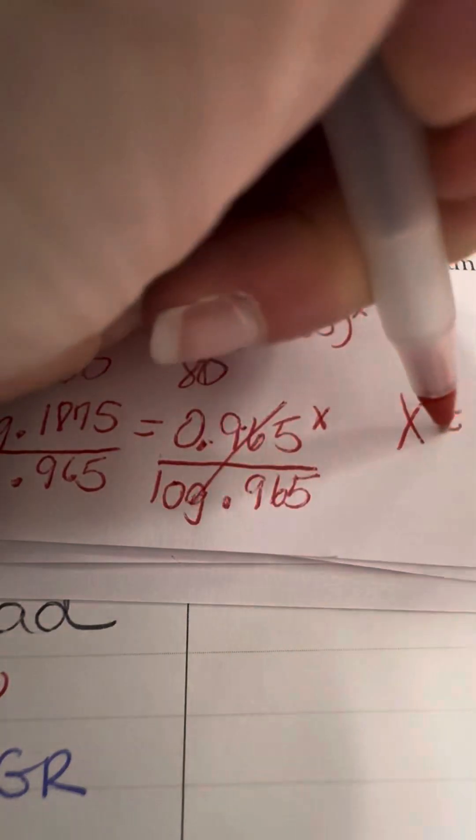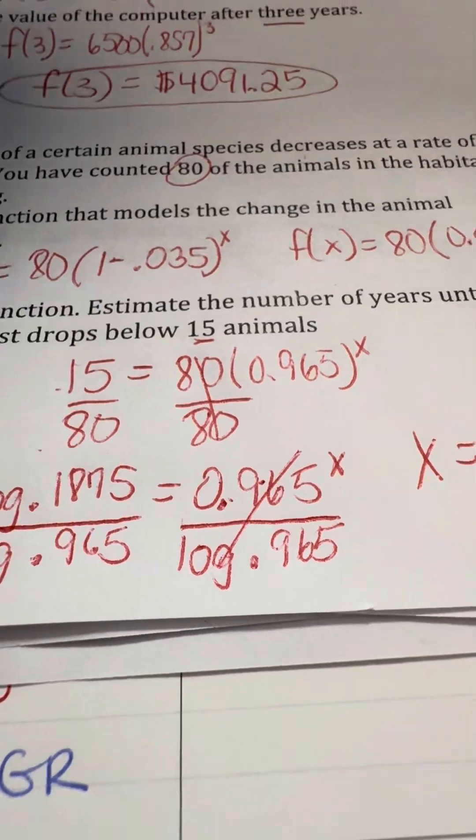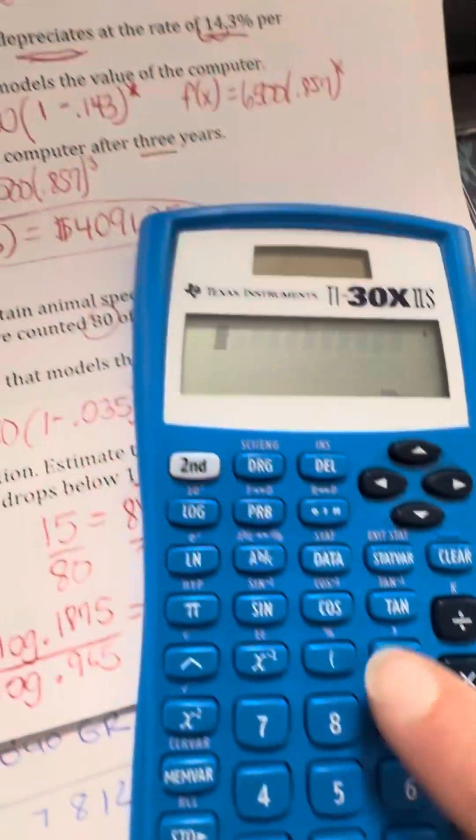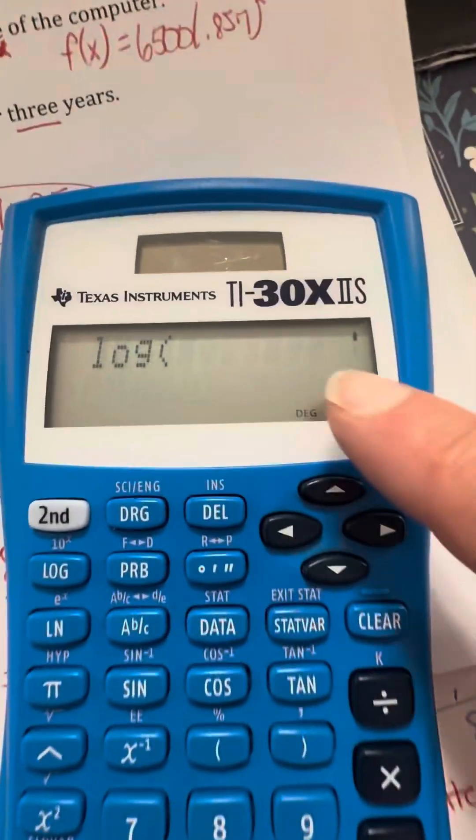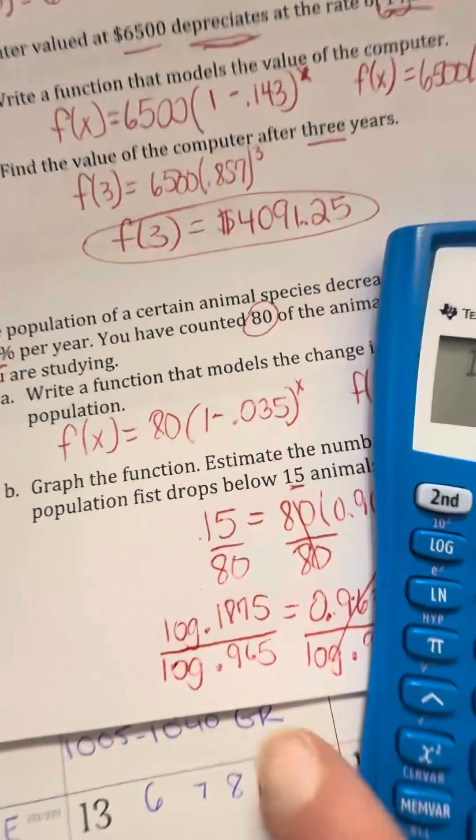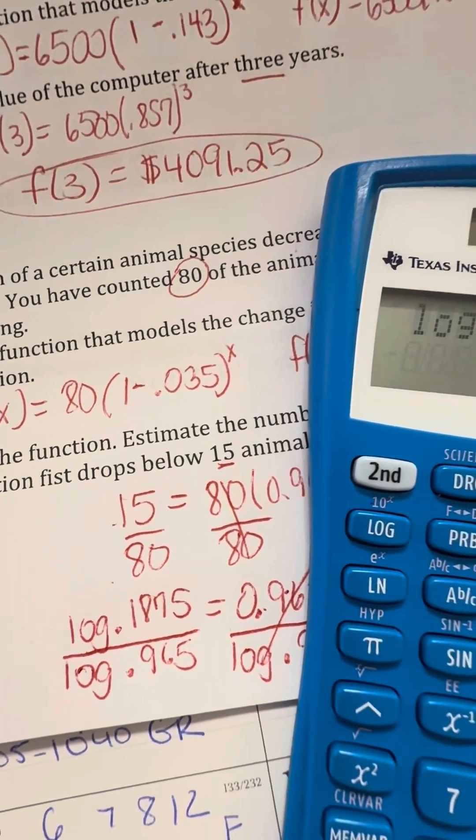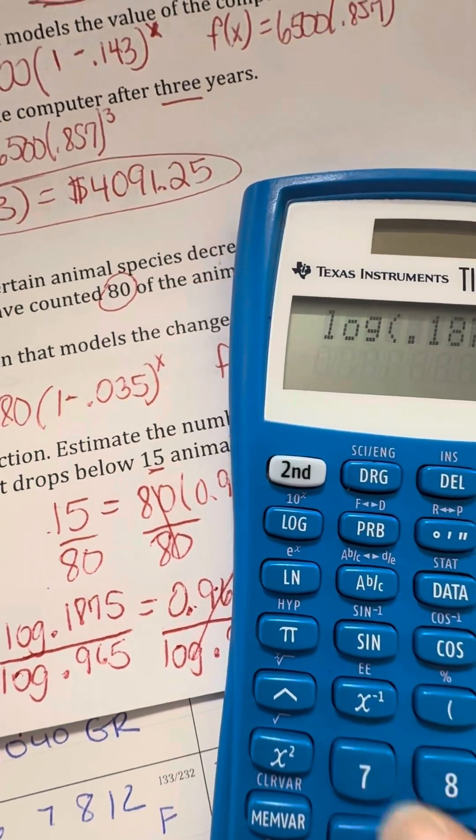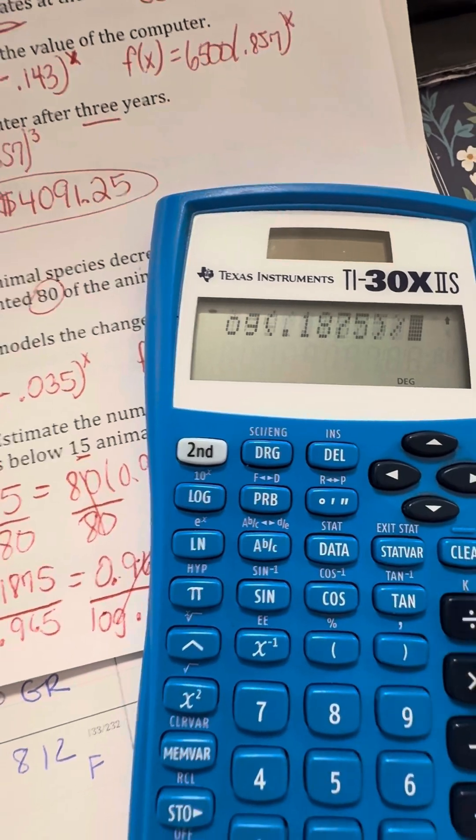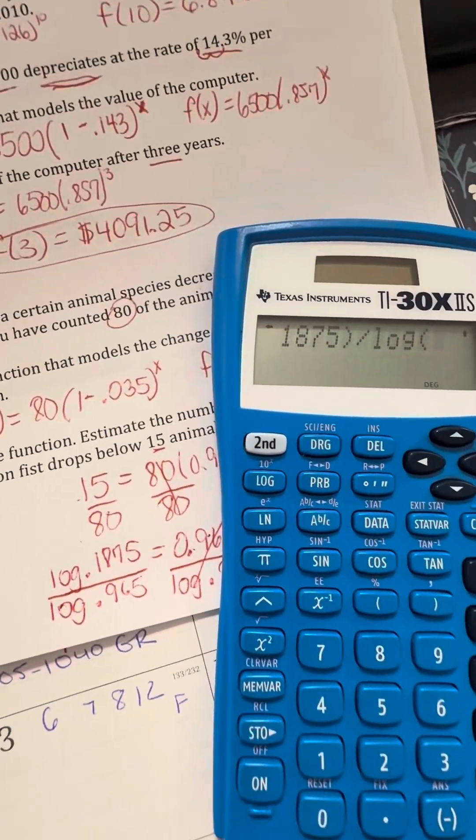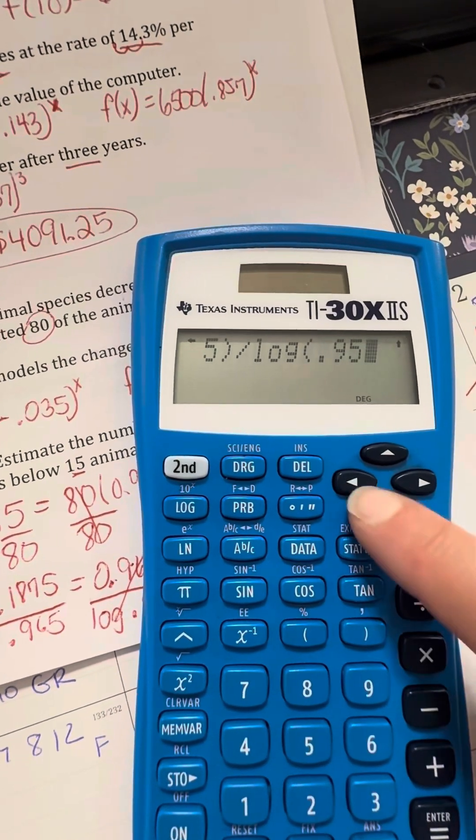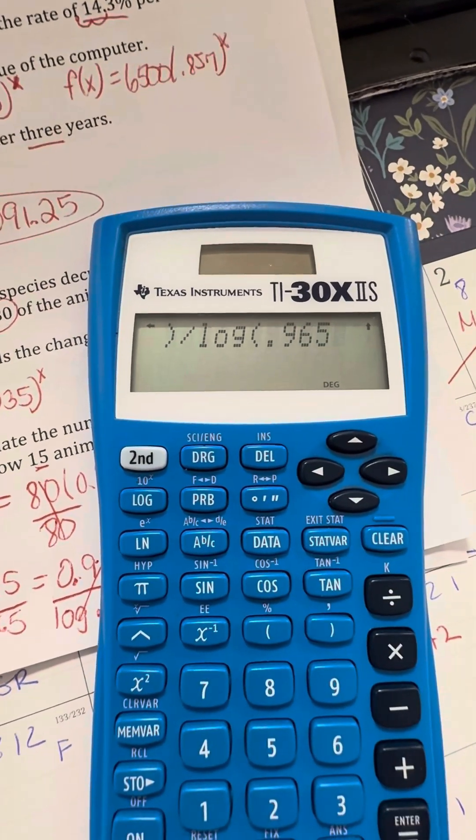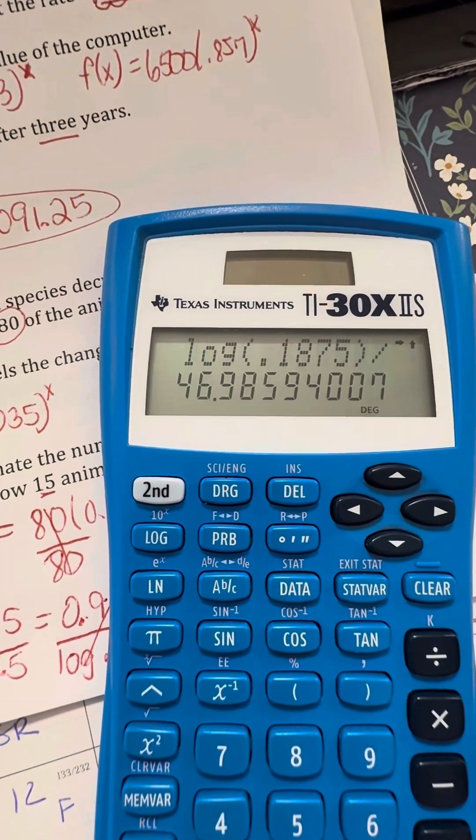And now on my calculator, I'm going to show you how you do this. You are going to do the number log. You're going to do the log button on the calculator. So here's this one. You'll see it has parentheses. We're going to put the number that we have, 0.1875. And then we're going to close the parentheses, hit divide, do log again. Then 0.965. And then we hit enter. And you get an answer of 46.98.